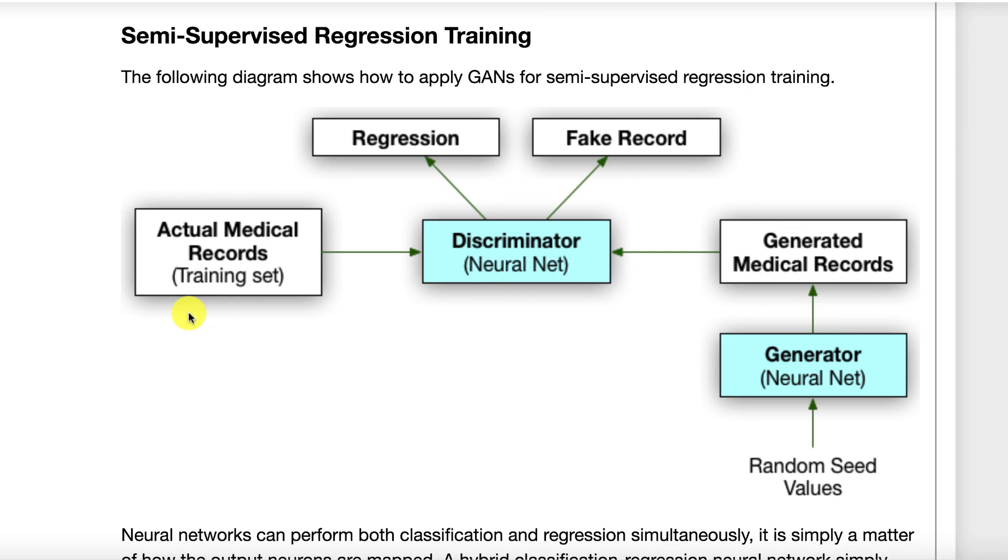And just like the classification one, when we're all done with this, we throw away the generator, and the discriminator becomes the semi-supervised neural network that was trained on this.